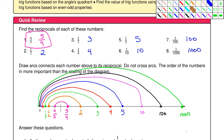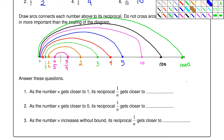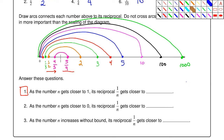Hopefully you get the gist — none of the arcs cross, and they sort of emanate going outward from the number one. The answer to the first question: as the number n gets closer to one, its reciprocal 1/n gets closer to... As your number gets closer to one, from either side, the reciprocal also gets closer to one. So the arcs are coming in toward number one. In calculus, you would write: n approaches 1, and then 1/n approaches 1 as well.